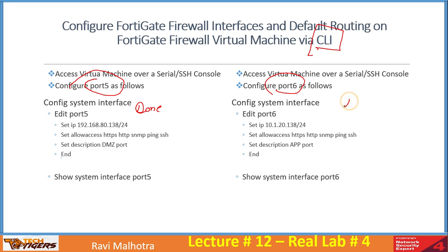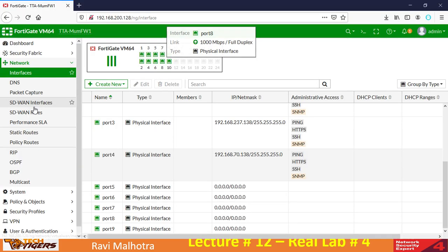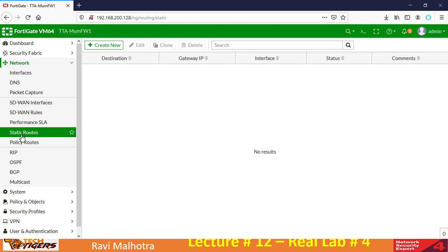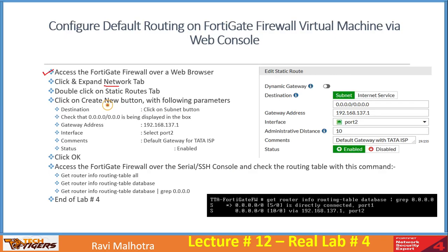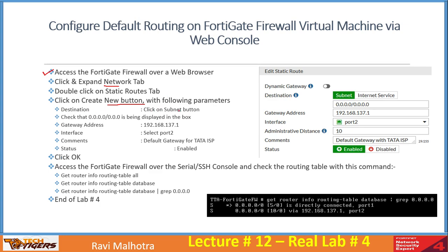Both interface sections are done. Now let's move to the next topic: how do you configure default routing on the FortiGate firewall via the web console. Access the FortiGate firewall over a web browser, click and expand the Network tab, then double-click on the Static Routes tab. Click the 'Create New' button with the following settings.